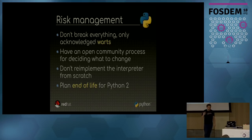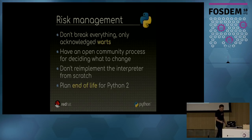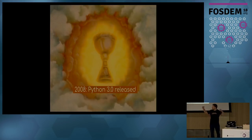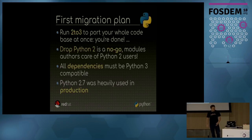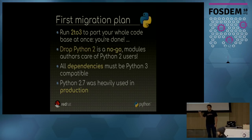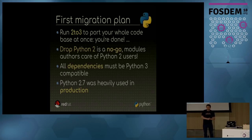And here it comes — it's the holy grail, Python 3. In 2008, we did it. The first migration plan was very simple: Python 3 comes with a tool called 2to3, to port your Python 2 code to Python 3 at once. The idea is that you run the tool on your code base and you're done — you're compatible with Python 3.